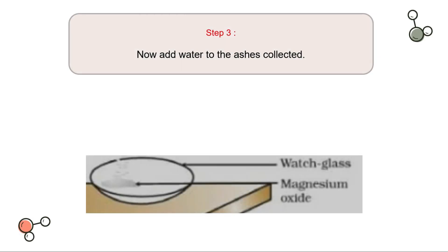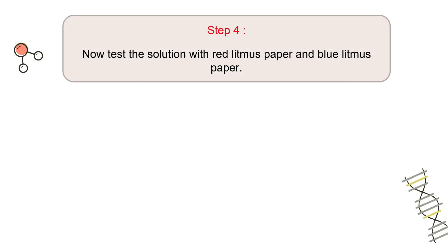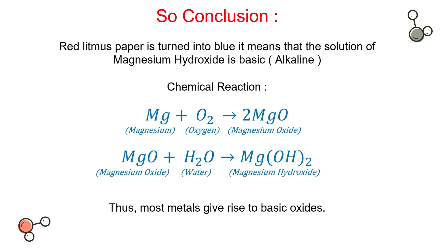The third step is to add water to the ashes collected, and the fourth step is to test the solution with red and blue litmus paper. The conclusion of this activity is that red litmus paper turns blue, meaning the solution of magnesium hydroxide is basic. We can conclude that when metals react with oxygen, they give us a basic solution — a basic oxide. The chemical reaction is: 2Mg + O₂ → 2MgO. Then, magnesium oxide reacted with water produces magnesium hydroxide. You need to memorize this reaction.